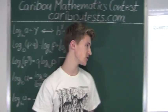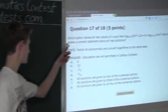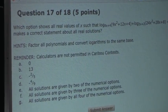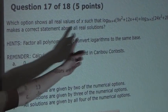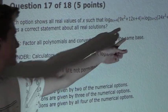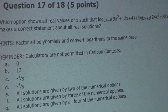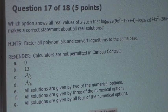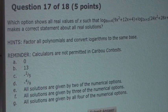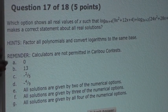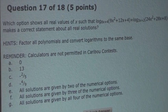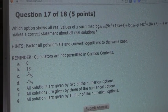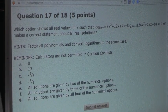The question is: which option shows all real values of x such that this expression is equal to 4, or makes a correct statement about all real solutions? The hint says to factor all polynomials and convert logarithms to the same base.